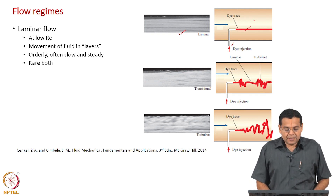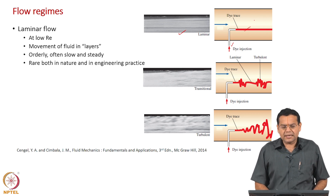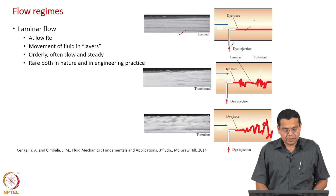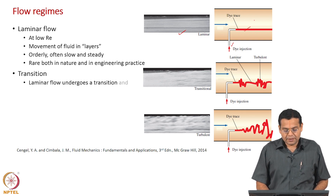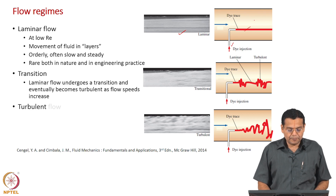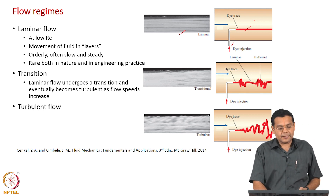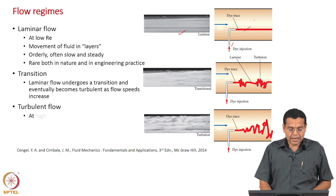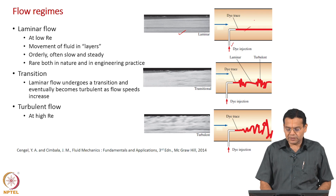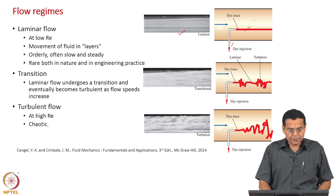Laminar flow is rare in nature and in engineering practice. Looking at the other extreme — turbulent flow, which happens at high Reynolds number — turbulent flow is almost opposite to laminar flow behavior. It is chaotic, completely disordered, and unsteady.